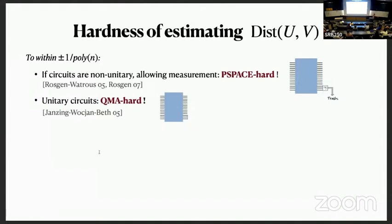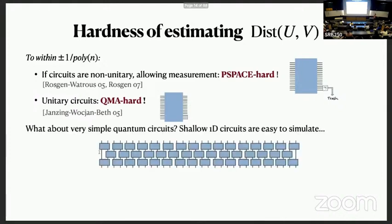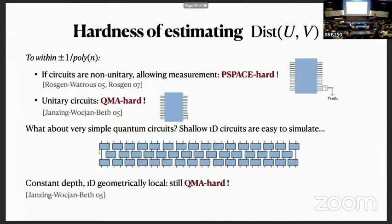You could ask this question about really simple quantum circuits — for example, these constant depth quantum circuits that are geometrically local in one dimension, meaning your qubits are laid out on a line and you're only allowed nearest neighbor gates. These circuits are really easy to simulate; we can calculate output probabilities, we can sample from them. But actually, the identity check — calculating how close the circuit is to identity — is still QMA hard, which is maybe surprising.